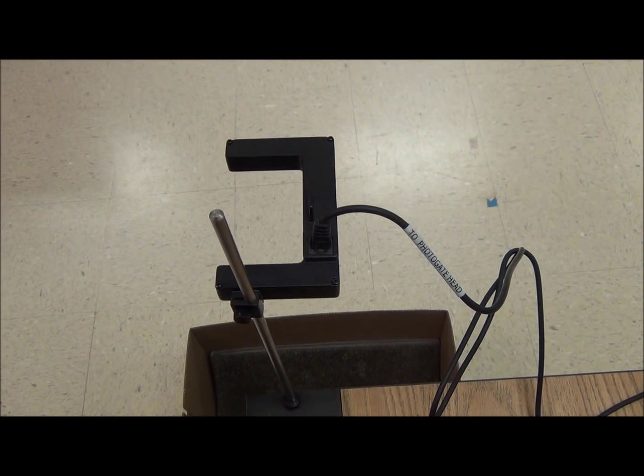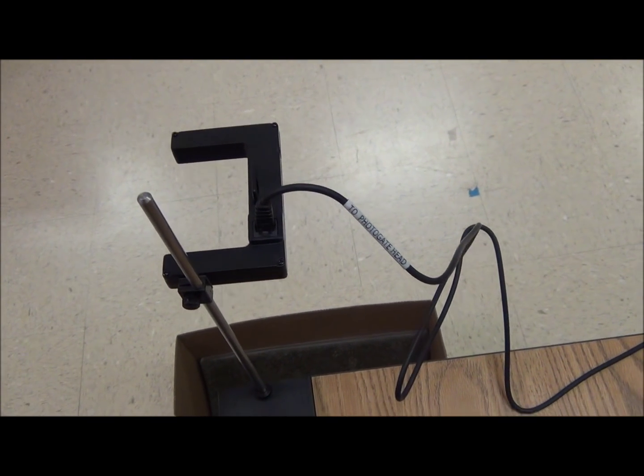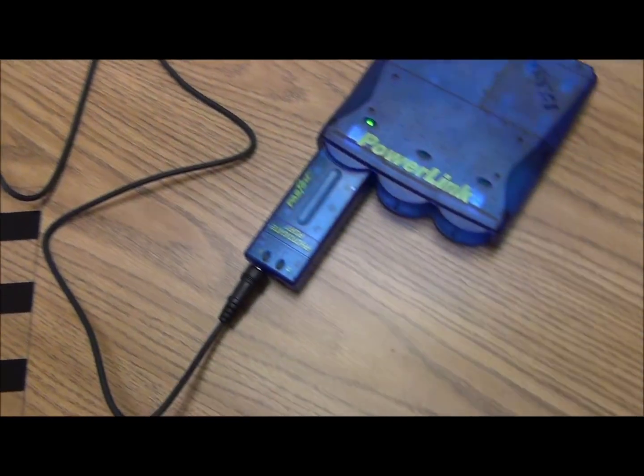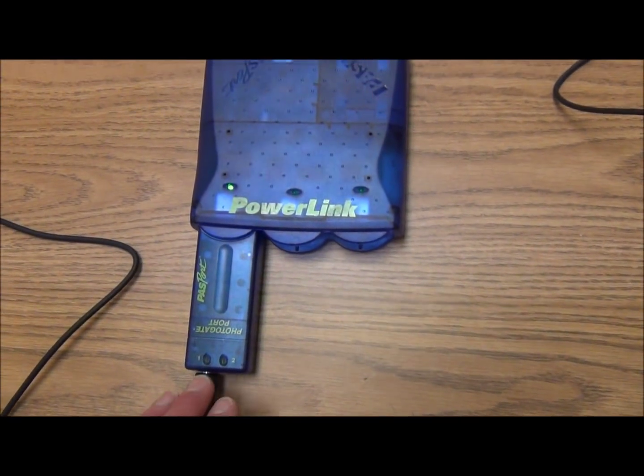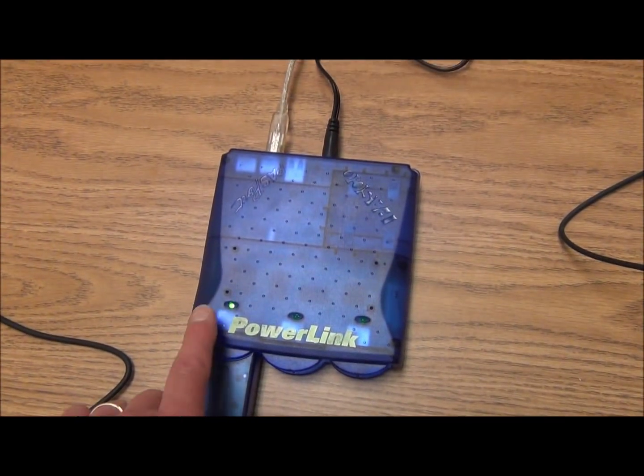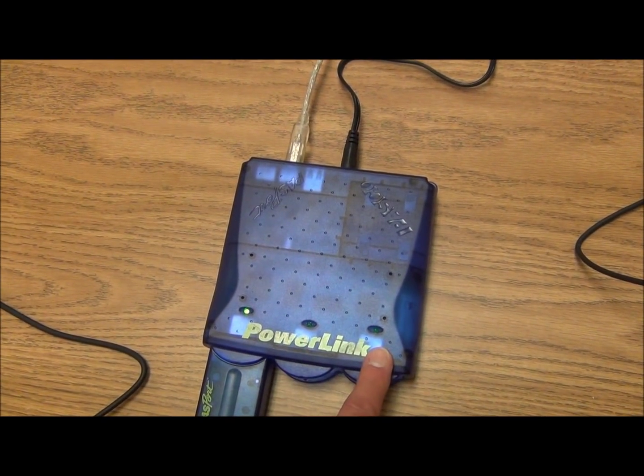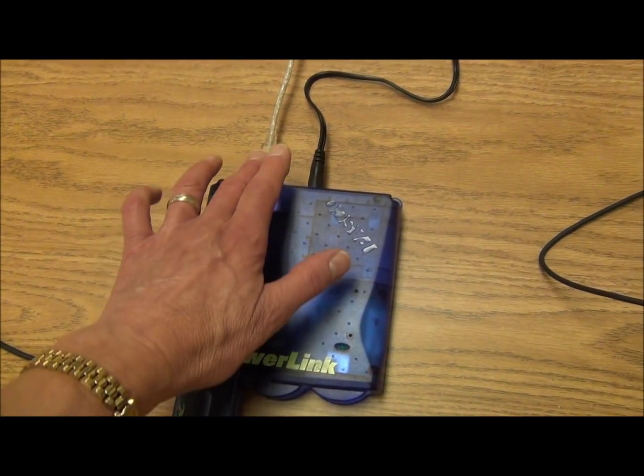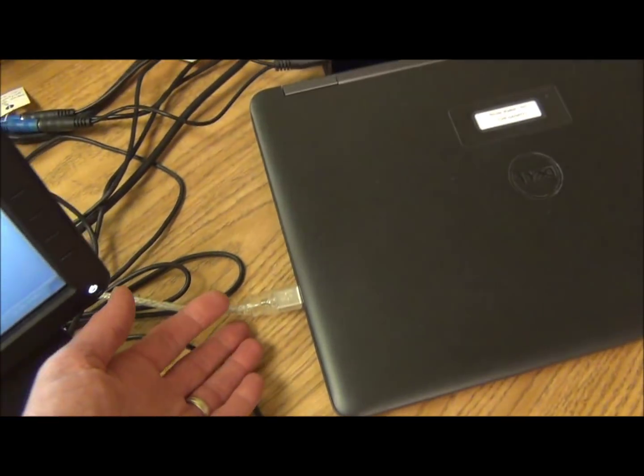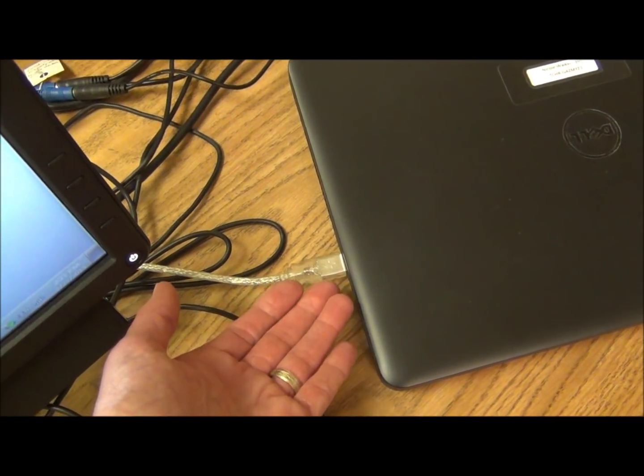In order to see that your photo gate is functioning properly, follow the cord from the photo gate back to the power link. The power link has a photo gate port. There should be a green light, regardless of whether you've plugged into port 1, 2, or 3. Follow the cord back to your computer and see that the USB cord is plugged into your computer securely.